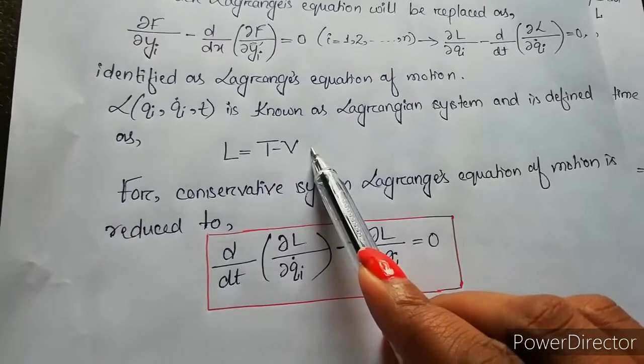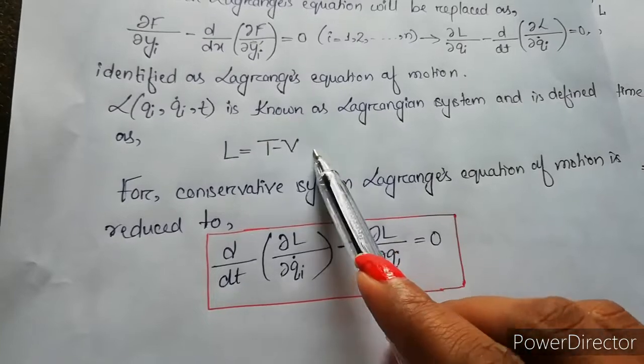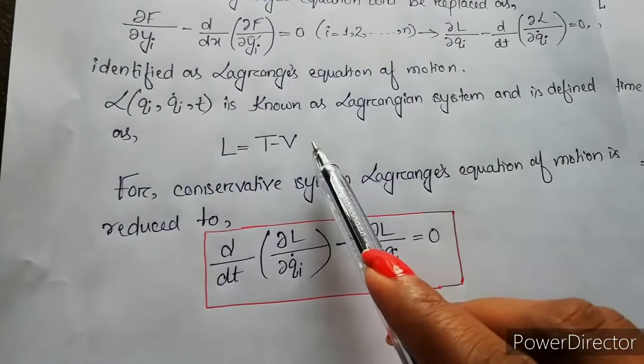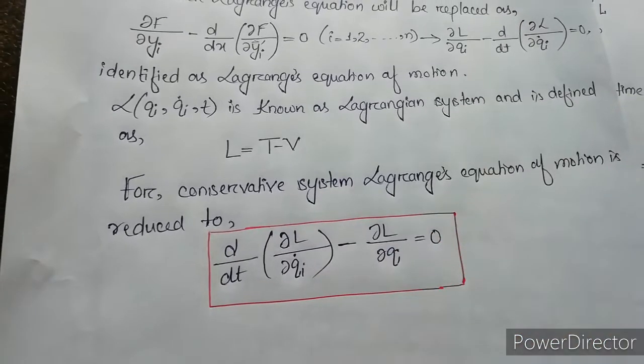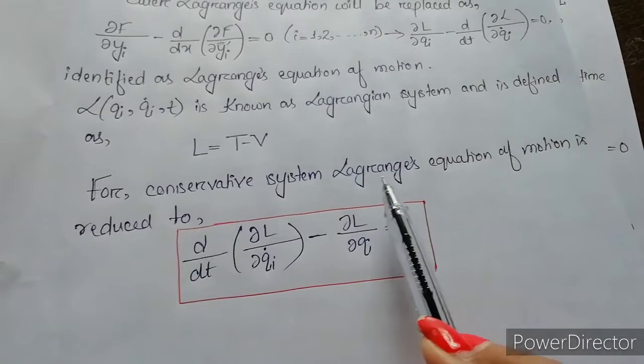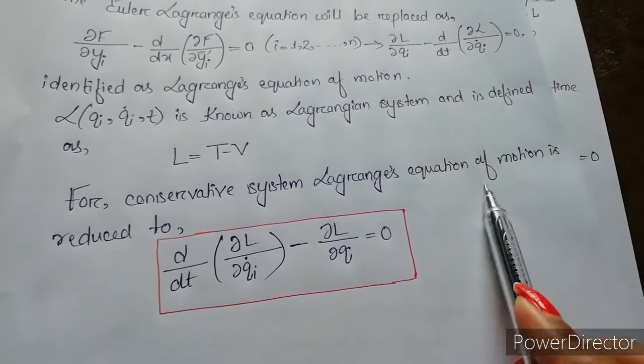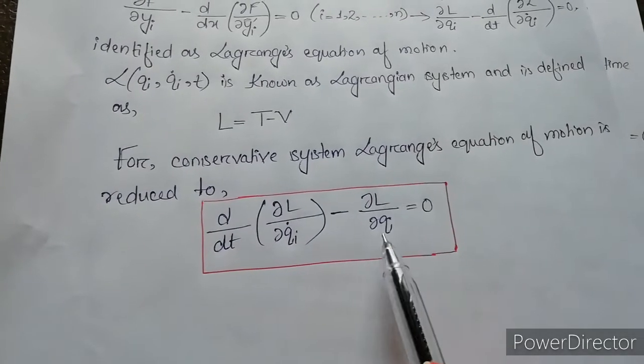This potential energy V can be a function of generalized coordinate, generalized velocity, or time t. Such types of terms are said to be monogenic terms, so V is a monogenic term. For a conservative system, the Lagrangian equation of motion is reduced to d by dt of del L by del qi dot minus del L by del qi equals zero.